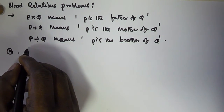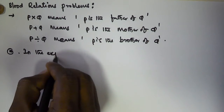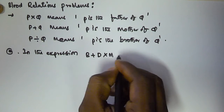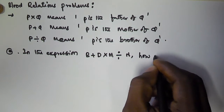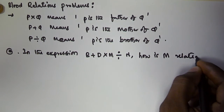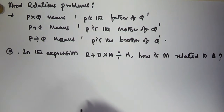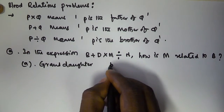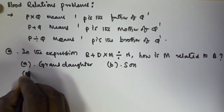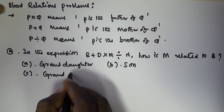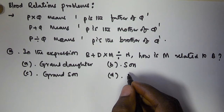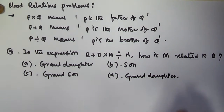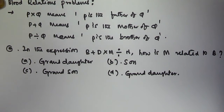The given problem is: in the expression B + D × M ÷ N, how is M related to B? Option A is granddaughter, option B is son, option C is grandson, and option D is granddaughter only. We have to find how M is related to B.